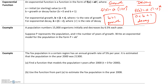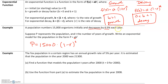Here's an example. A population numbers 15,000 organisms initially and decreases by 6.5% each year. Suppose p represents the population and t is the number of years of growth — write an exponential model for the population. Our initial amount is 15,000. Because we have decay, the function uses 1 − r raised to the t power. The rate of decay is 6.5%, which in decimal form is 0.065.